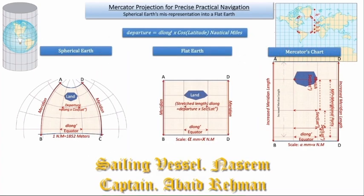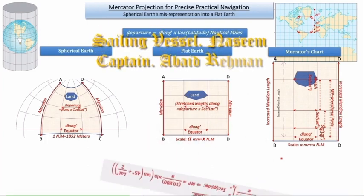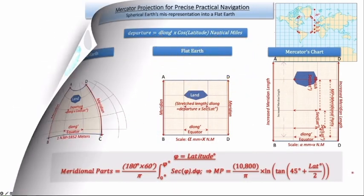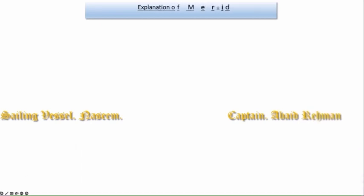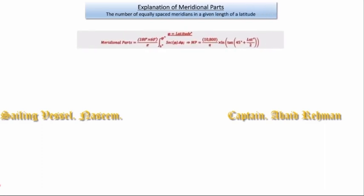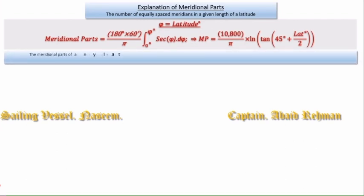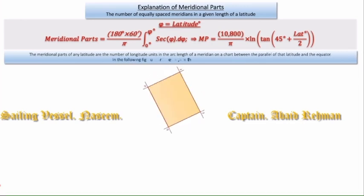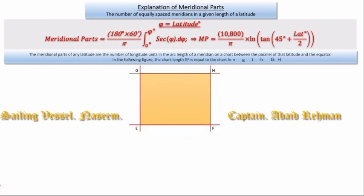This non-linear stretch of the meridian is called the meridional parts, which is found by a complex mathematical expression. The meridional parts are the number of equally spaced meridians in a given length of latitude. In other words, the meridional parts of any latitude are the number of longitude units in the arc length of a meridian on a chart between the parallel of that latitude and the equator.